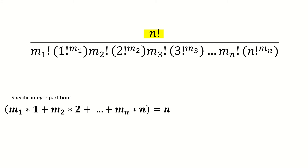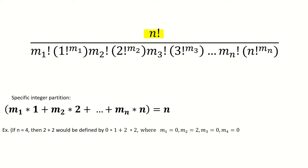Here, m1 is the number of times 1 appears in that integer partition, m2 is the number of times 2 appears, and so on. For the partition 2+2 of 4, m2 is 2, while m1, m3, and m4 are 0. Notice that since each m tells us how many times a summand of a given value appears, the sum of all the m's is the total number of subsets, or summands, in our integer partition — this is k.